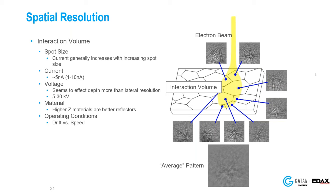Question: Is it possible to obtain EBSD patterns for thin films of less than 20 nanometers thickness? 20 nanometers is really thin. The only thing I can suggest for really thin films is to increase the tilt, but then you're smearing the beam out over a larger area, covering more grains and increasing the interaction volume. That's the best suggestion I have.